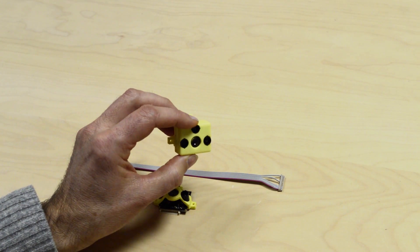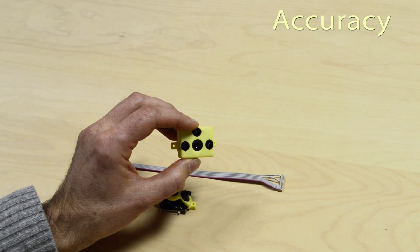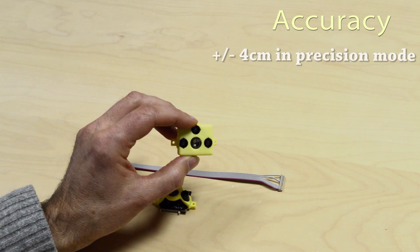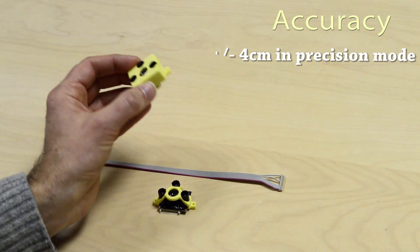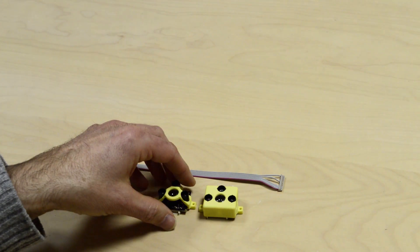Accuracy is in the plus or minus 5 to 10 centimeters range in fast mode, and plus or minus 4 centimeters in precision mode, and in both cases resolution is 5 millimeters.